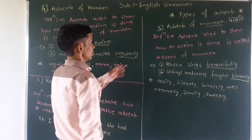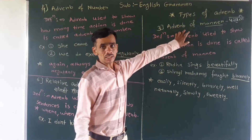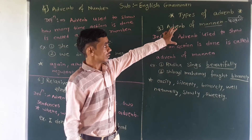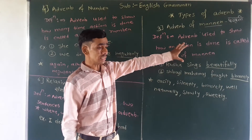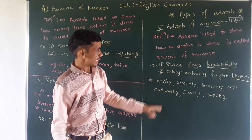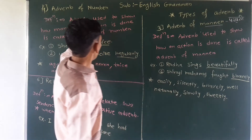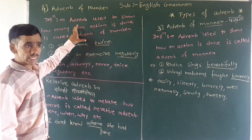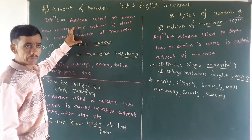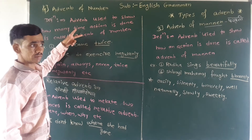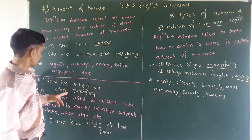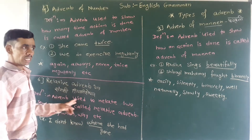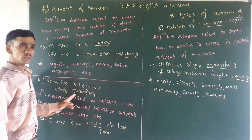So we have seen today: adverb of manner — it means paddhati darsha kriya, we show how action is done. Second, adverb of number — it means we show how much time or how many times action is done. Third, relative adverb — it means we show the relation between two sentences.